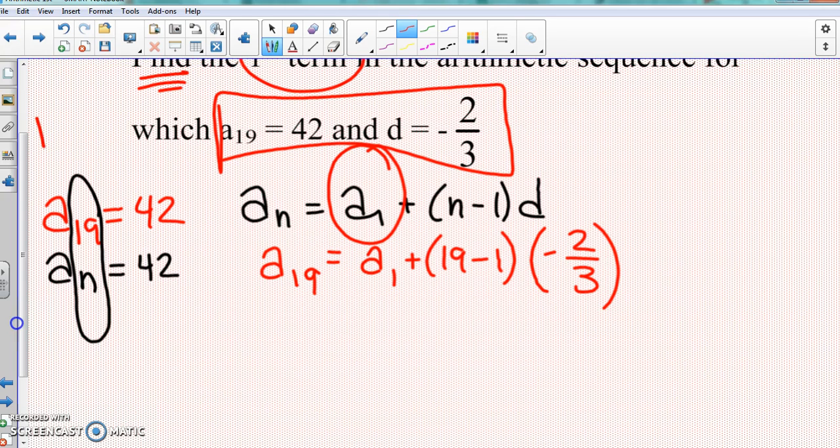And write that: the 19th term is 42. All right, so let's put that in and then we go ahead and work it out. We find what a₁ is.